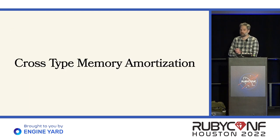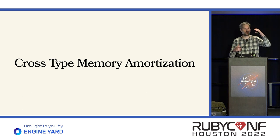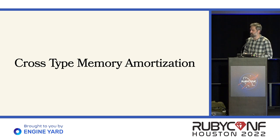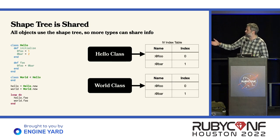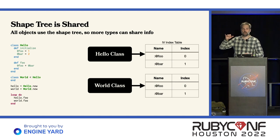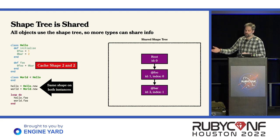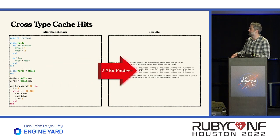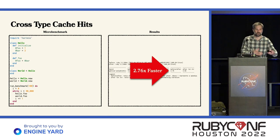What's cool about this is that we're able to share caches between subclasses. Before we couldn't get a cache hit in the subclass, but now we can because we don't care about types anymore — we only care about the IVs and the order they were set. We also get cross-type memory amortization: the shape tree is shared between all instances. We had an IV index table for a superclass and a subclass, but now we just have one shape tree for all classes. We're also able to do cross-type cache hits. This is our problem before where the Hello class and the World class were oscillating between the two, and we couldn't get cache hits. But in the world of shapes, those two types have exactly the same shape, so we can get cache hits where we couldn't before. A simple microbenchmark shows it's about 2.7 times faster, all impacted by being able to do cache hits where we couldn't before.